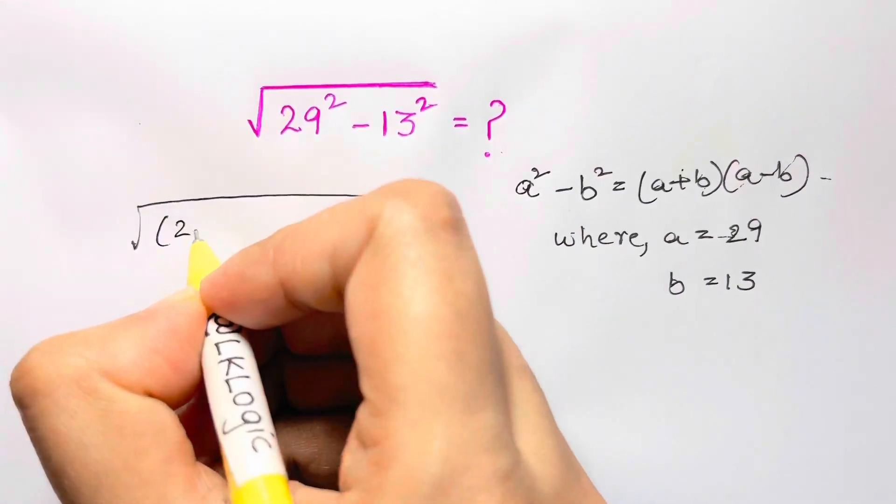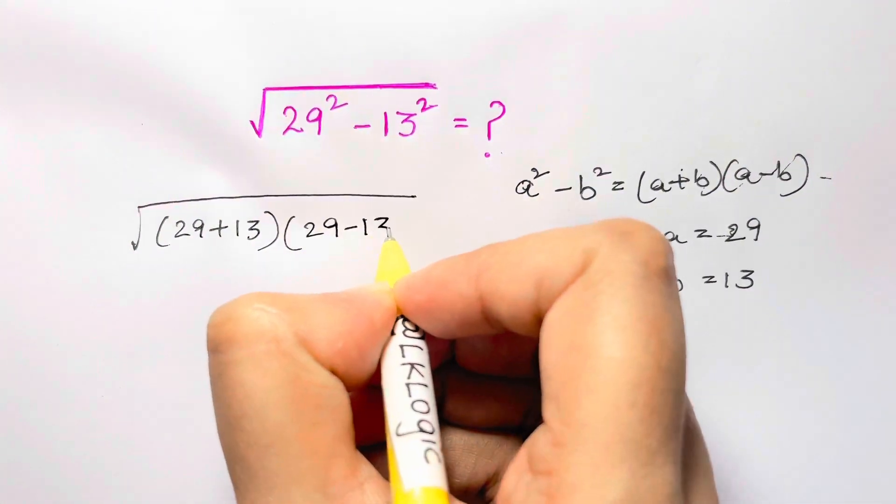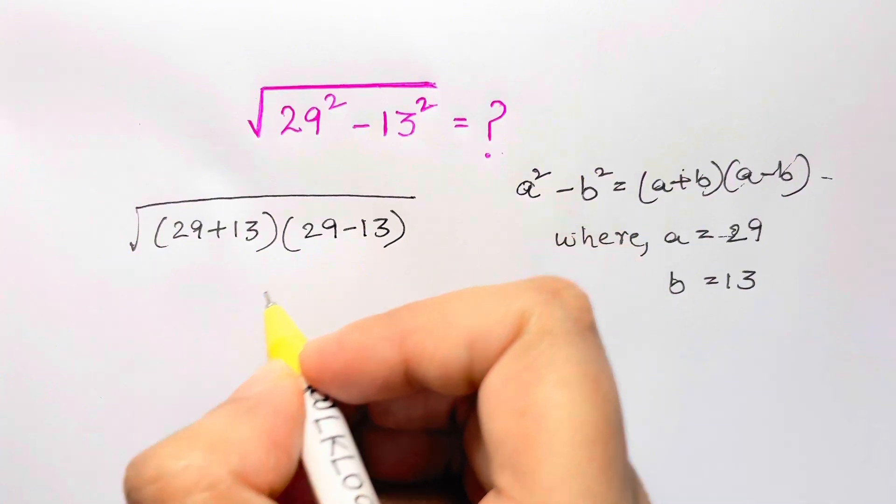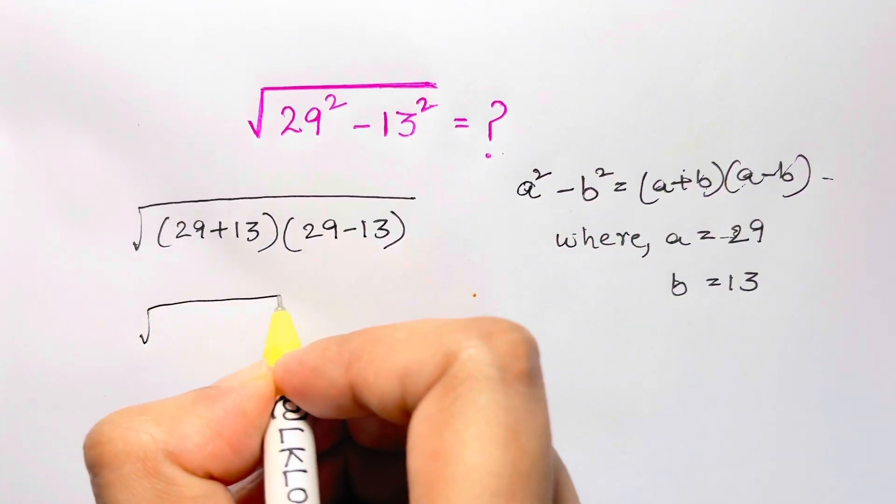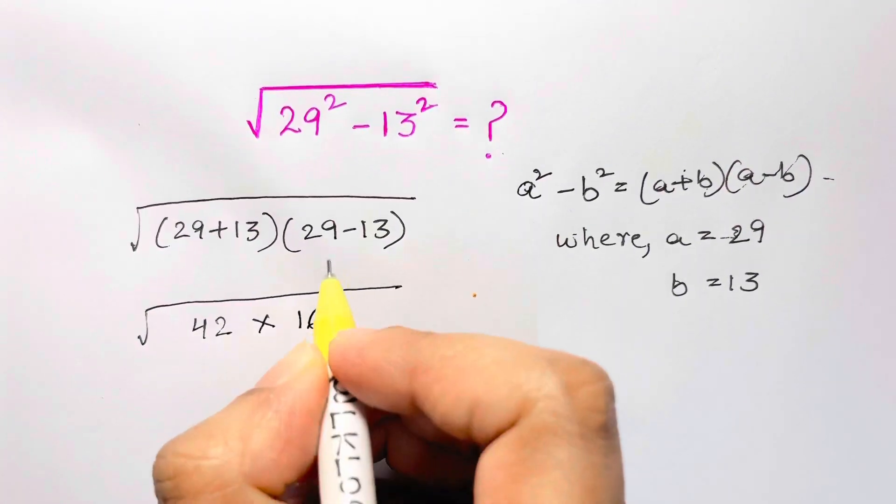So what's 29 plus 13? It's 42. And 29 minus 13 is 16. So we have square root of 42 times 16.